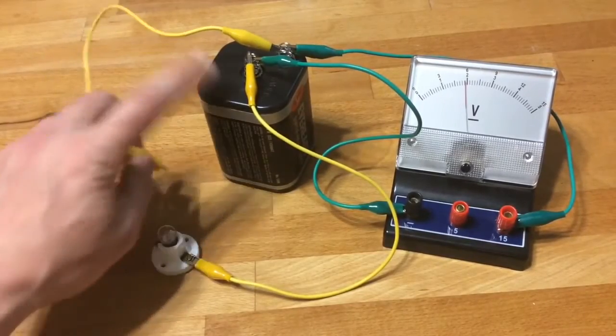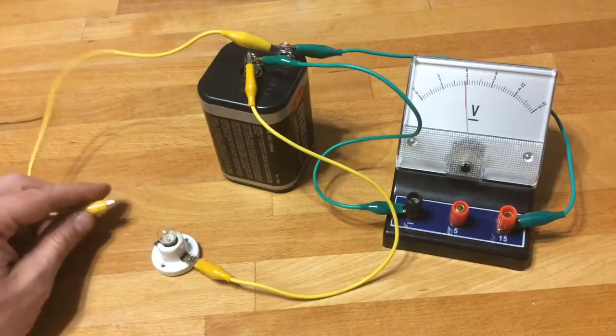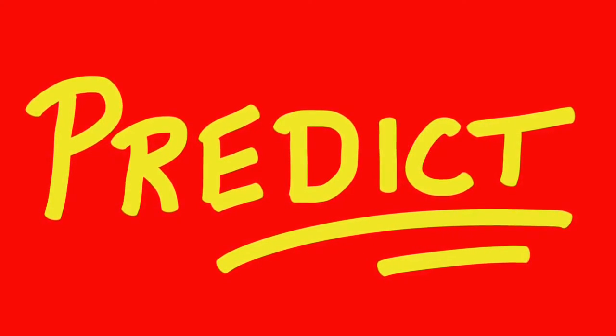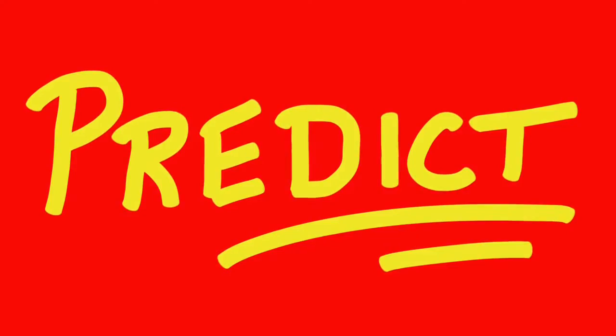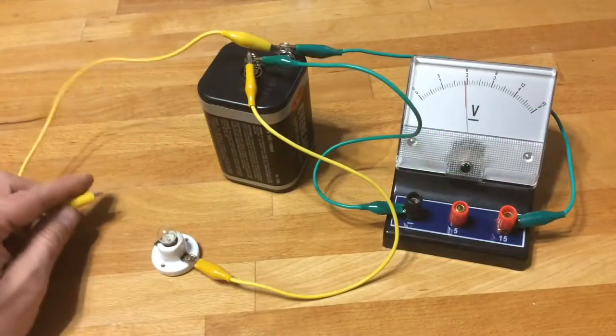Voltage of the battery is about 5.7 volts. What happens to that battery voltage when you connect the bulb? Here's where you stop and predict. Does it go up? Does it go down? Does it stay the same?